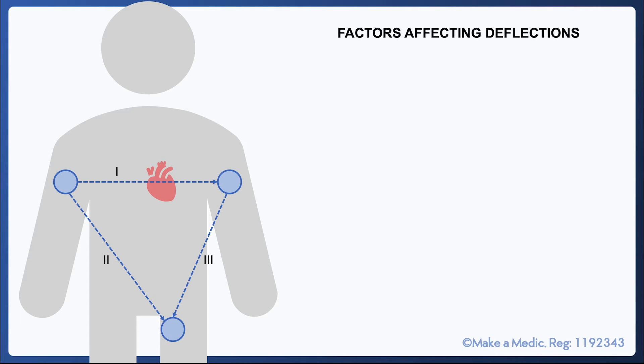There are two main factors that affect the direction of the deflections. First, the direction in which the impulse is moving. A wave of depolarization moving towards the sensor will cause an upwards deflection, whereas moving away from the sensor will cause a downwards deflection.